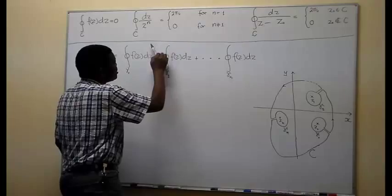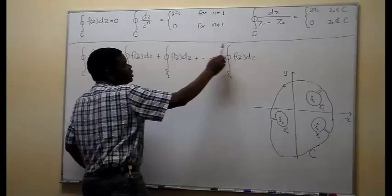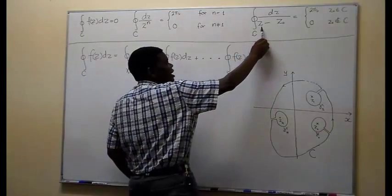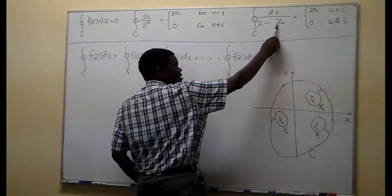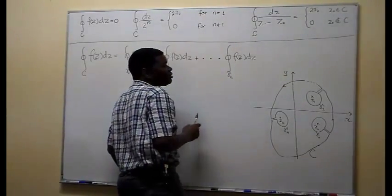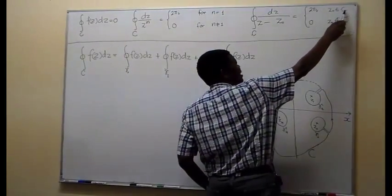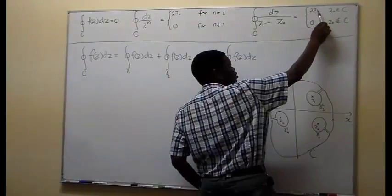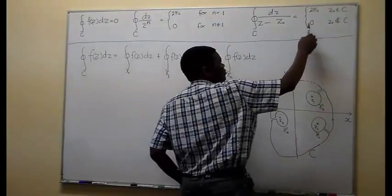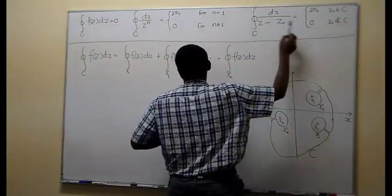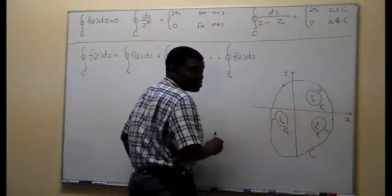We can generalize this for n = 1 to the situation where we have 1/(z − z₀), where z₀ is the pole of the function. We also get similar results: when z₀ is inside the curve the integral is 2πi, and when z₀ the pole is outside the curve, the function becomes analytic and by Cauchy's theorem the integral becomes zero.